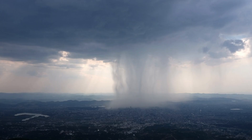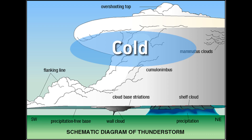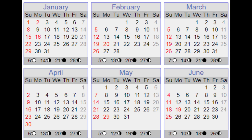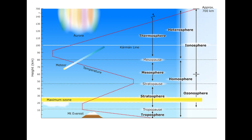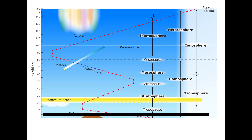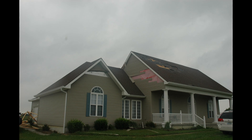Cold air funnels form underneath showers or weak thunderstorms when the air high up is especially cold. They are most prevalent in fall and spring, when the sun can warm the lower levels of the atmosphere, causing heat to rise by convection and form showers, while temperatures around 15,000 to 20,000 feet above the ground are still quite cold. In very rare cases, cold air funnels can touch down and become tornadoes, causing weak EF0 damage most of the time.